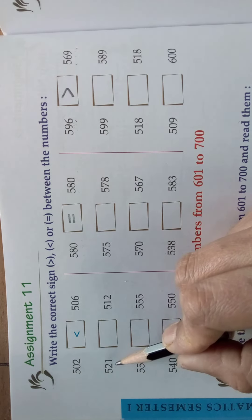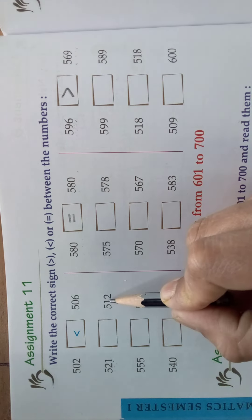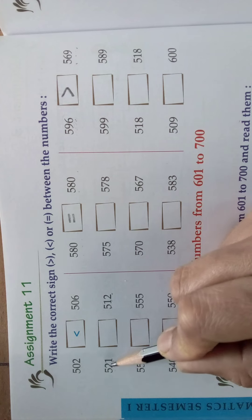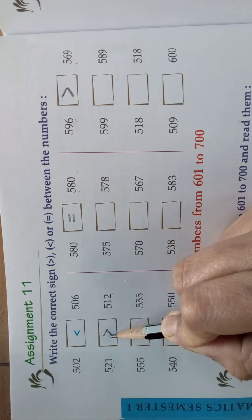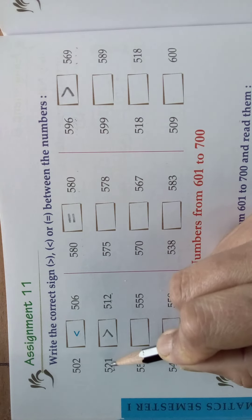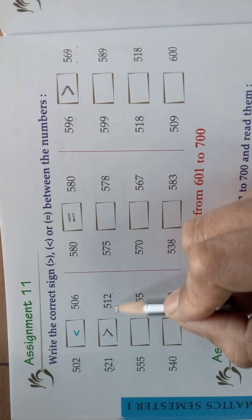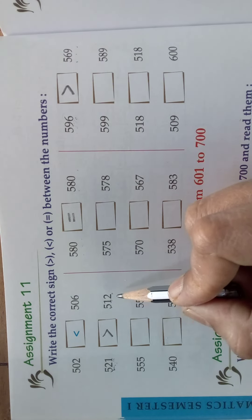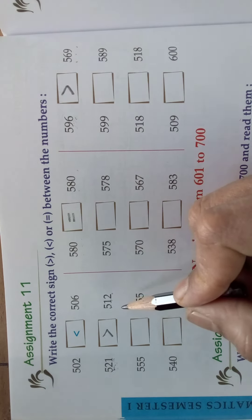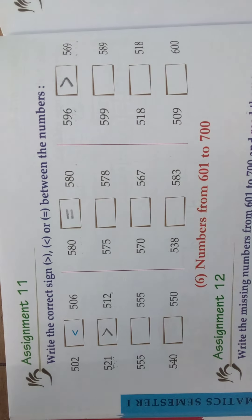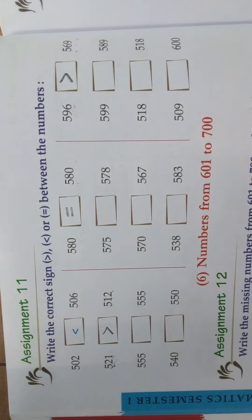Come, I will do one more sum: 521 and 512. Which is the bigger number? 521. So the mouth will eat the big number, because it is 521 and not 512. Read the numbers carefully so that you can find out which is big. 521, 512. Also: 621, 154.